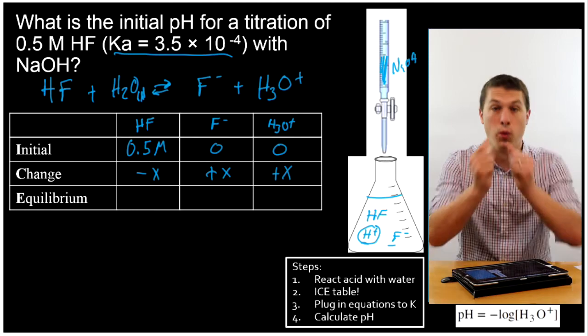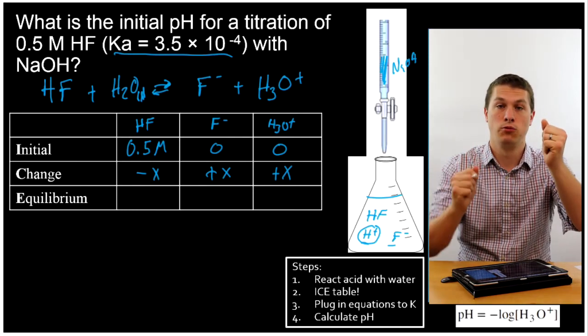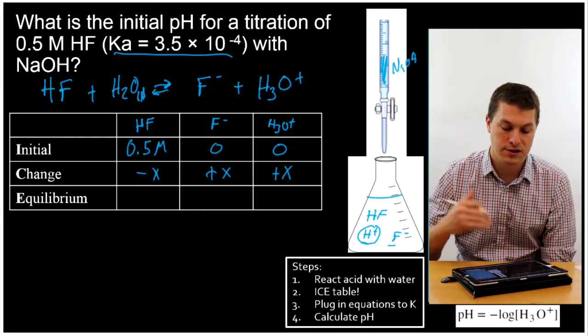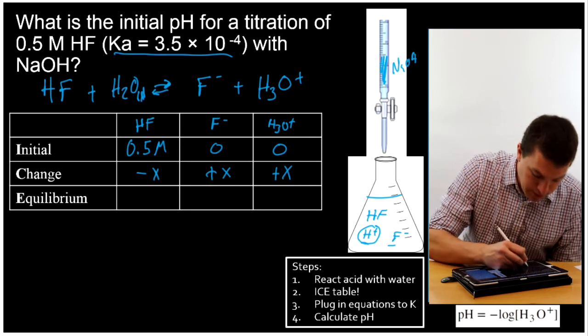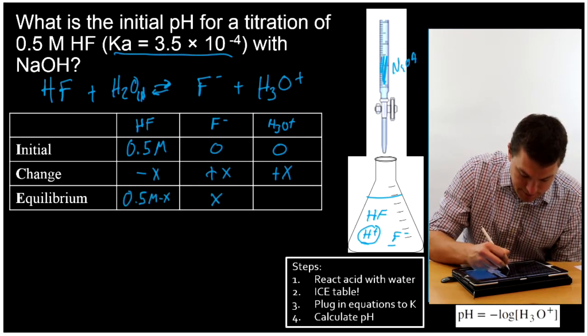So for example, if I have one molecule of HF split, it gives me one F- and one H3O+. So that's why those X's are all the same. For however much my HF drops, my H3O+, and my F- will increase. At equilibrium, we'll get 0.5 molar minus X, X, and X.